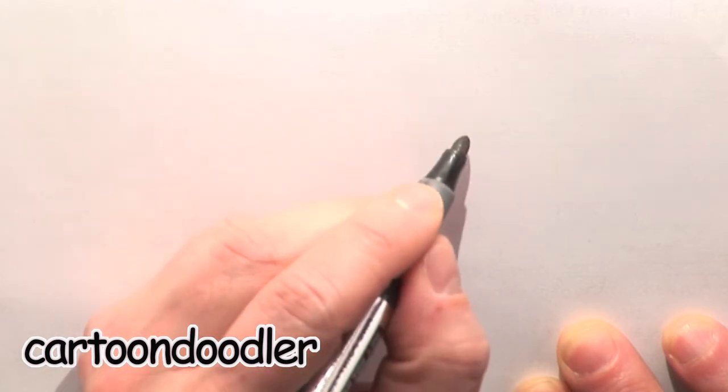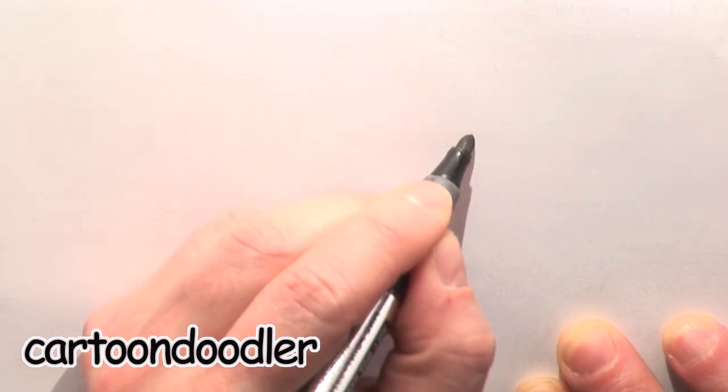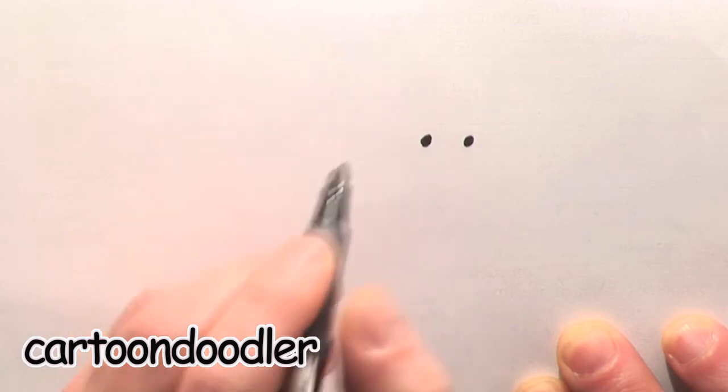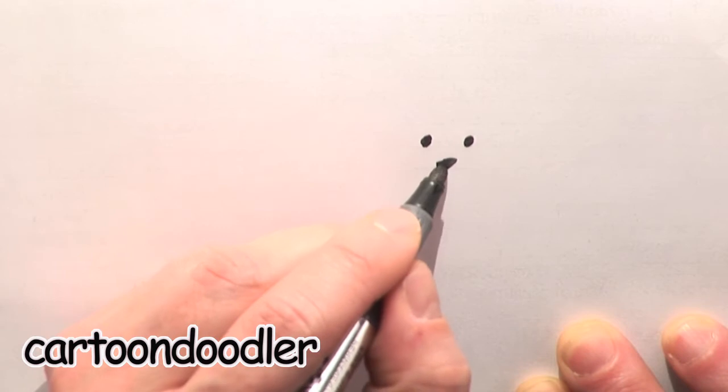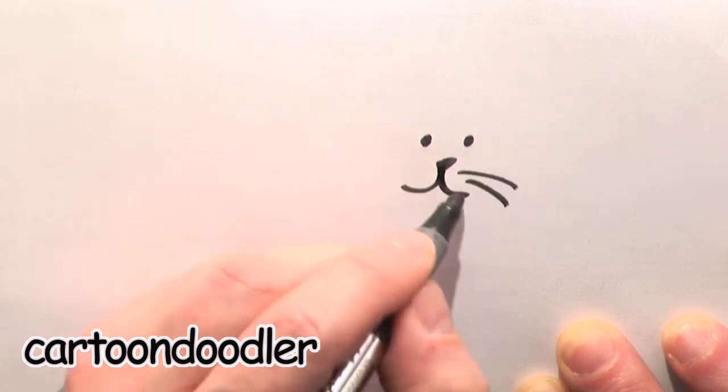We're going to start with his face, which I'm going to put kind of close to the center of the page, but maybe a little bit above the center. Give him two little eyes, his little nose and mouth, and I'll give him his whiskers.